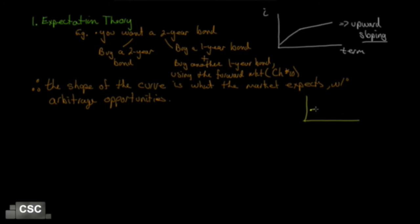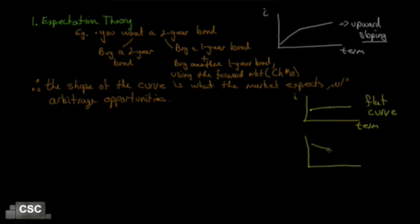Here's another example: a flat yield curve. It is possible that almost all rates across all maturities are very close — we call that a flat yield curve. And then we have something where interest rates on short-term debt are higher than interest rates on long-term debt. This is called a downward-sloping or inverted yield curve, and typically we get inverted yield curves just before recessions.